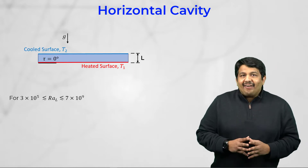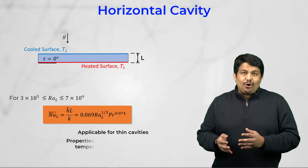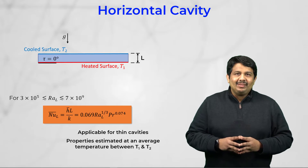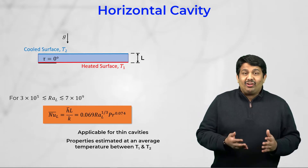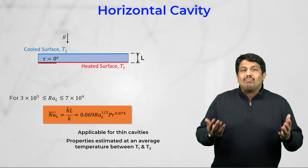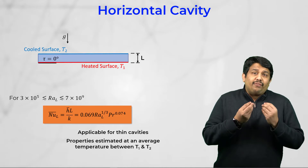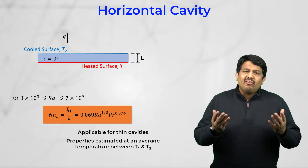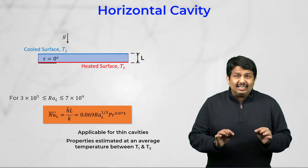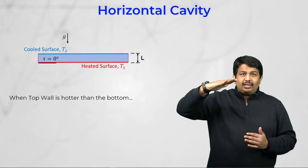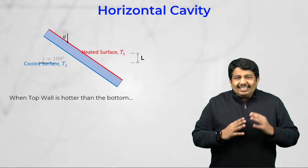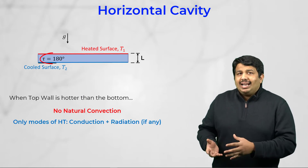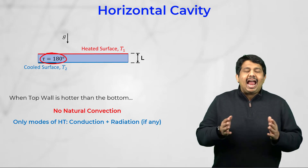The following correlation for the average Nusselt number is provided by Globe and Dropkin to quantify the heat transfer in horizontal rectangular cavities. This correlation is applicable for thin cavities where H over L is much greater than 1, and the fluid properties are estimated at an average temperature between T1 and T2. Finally, no natural convection can exist when the top wall is at a higher temperature compared to the bottom wall, implying that the only modes of heat transfer inside a rectangular cavity with a tilt angle of 180 degrees are conduction and radiation, if any.